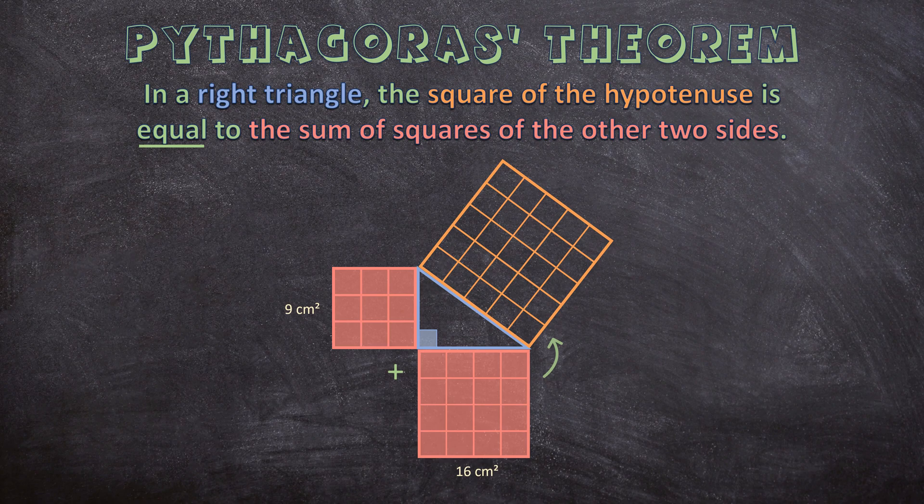Now the theorem says if we add these two together, we'll get the answer of the other square. So 9 centimeters square plus 16 centimeters square is 25 centimeters square. Now let's see if this is true.